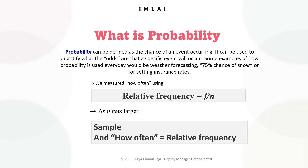Similarly, the probability of getting tails is also one divided by two — again 0.5. Probability theory is used in a wide range of applications including science, engineering, finance, and the social sciences. It's particularly important in fields such as statistics, machine learning, and artificial intelligence, where it is used to model complex systems and make predictions based on incomplete or uncertain information.